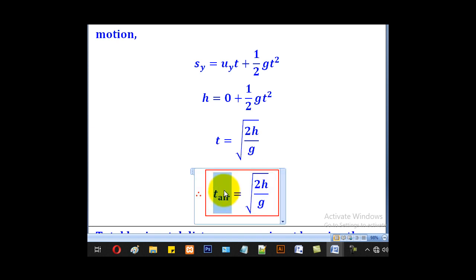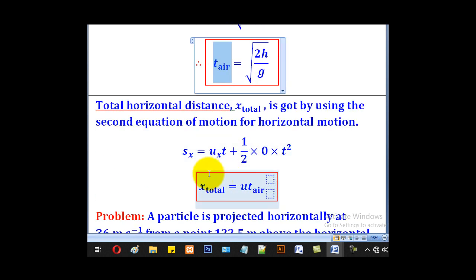That is the formula for time spent in air. For the horizontal distance traveled, we shall still use the second equation of motion for horizontal motion. So sx is equal to uxt plus a half times 0, where 0 is the acceleration. Remember for horizontal motion, acceleration is 0, times t squared. So this goes away and we remain with sx, which is x total, equal to ux which is u times t, which is time spent in air.